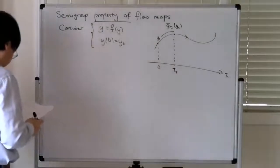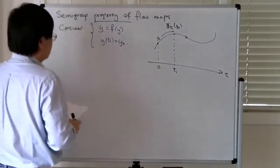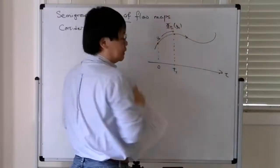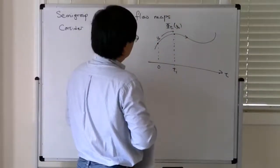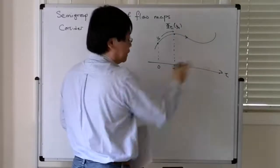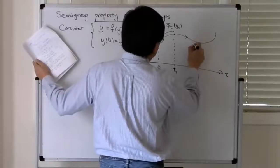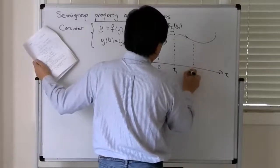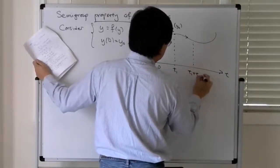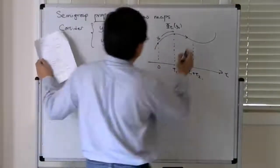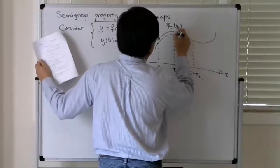And then you can ask, well, what happens if I then use this value at time t1 as an initial condition and then apply a flow map again? So you could imagine some later time which is t1 plus t2, and you go from here to here.